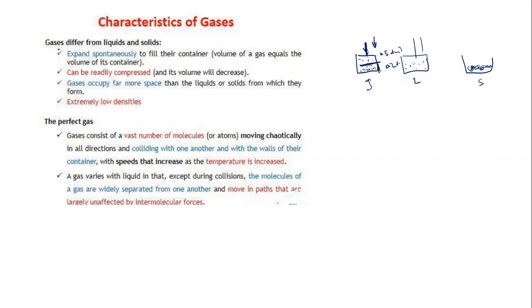Gas particles have extremely low densities. You might think gases have no mass because they float freely, but gases do have mass — they are matter, which occupies space and has mass. The formula for density is ρ = m/v, so we need mass to calculate density. Gases have mass and volume, which confirms they are matter.